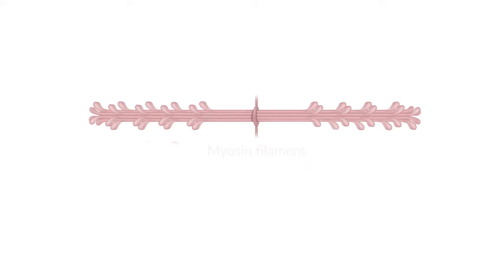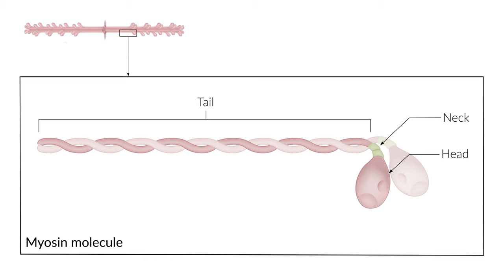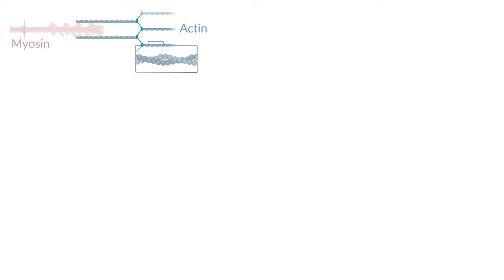We'll start with myosin. A myosin filament contains approximately 300 myosin molecules. The myosin molecule is composed of a tail and a head, as well as a neck that forms a link between both. The myosin head has an actin binding site with a high affinity for actin and an ATP binding site and a domain with ATPase activity.